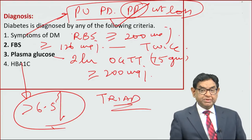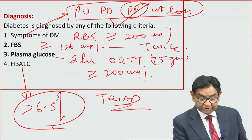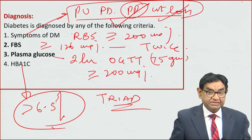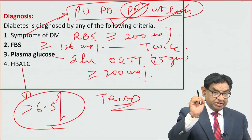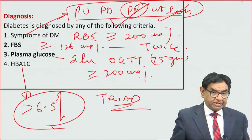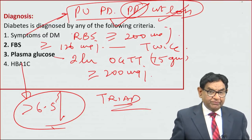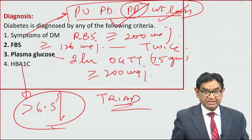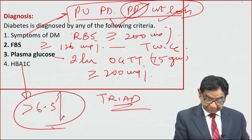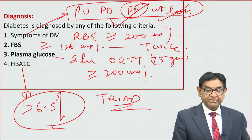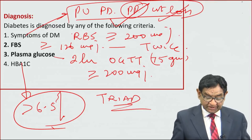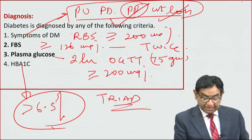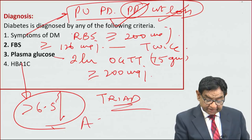The answer is polyphagia. Most people go for weight loss as the wrong answer, but the correct answer is polyphagia. Note: polyphagia is a part of diabetic symptoms, but it is not part of the classical triad of diabetic symptoms.